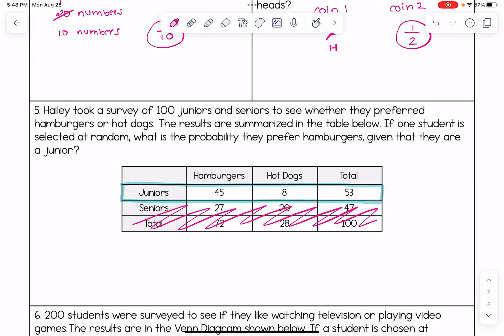So for juniors, there's 53 of them that were surveyed. How many preferred hamburgers? That's 45. So very simply, we get 45/53. So the idea is really just reducing that sample space, and then the answer becomes quite obvious from the table.